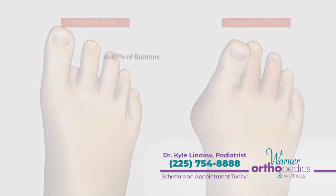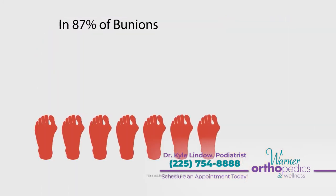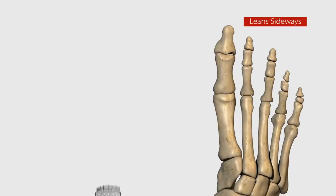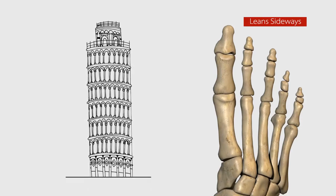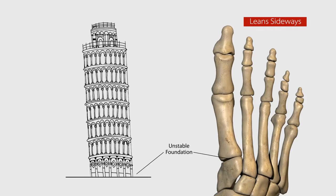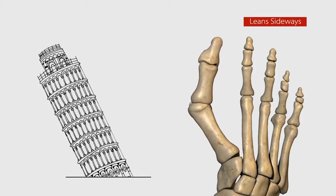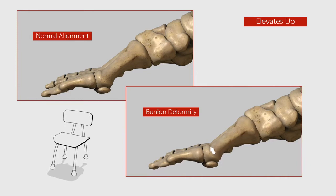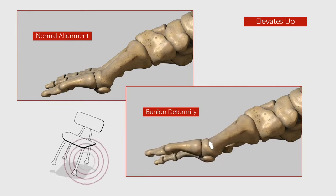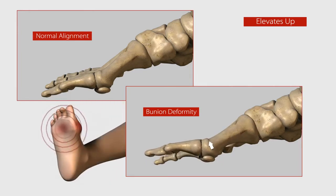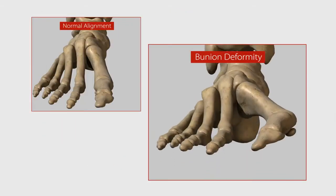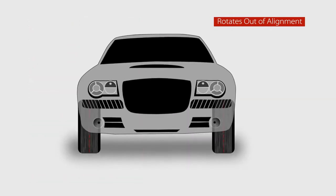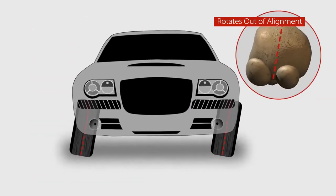In fact, in 87% of bunions the bone is misaligned in three dimensions. First, like the Leaning Tower of Pisa with its unstable foundation, your bone starts to lean sideways. Secondly, your bone often elevates up like a stool with a short leg — this transfers excessive load to the other toes, causing pain in the ball of your foot. Thirdly, your bone can rotate out of alignment like a tire out of alignment.